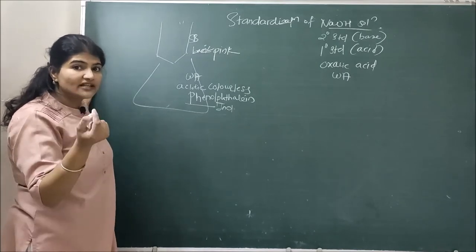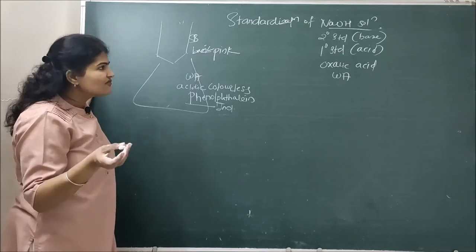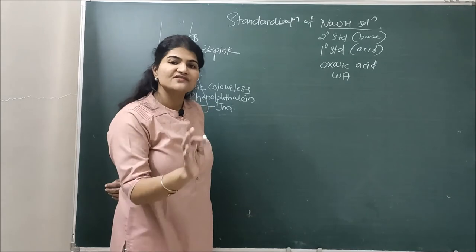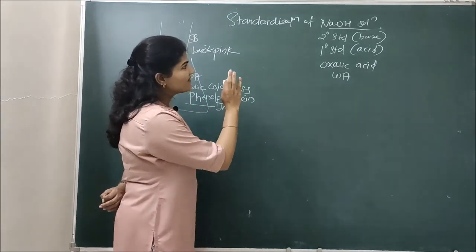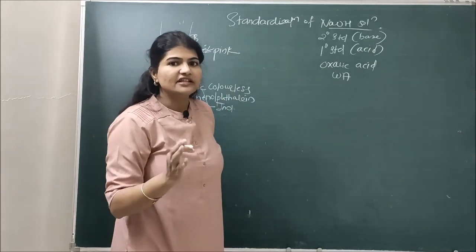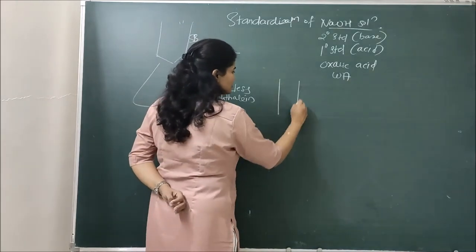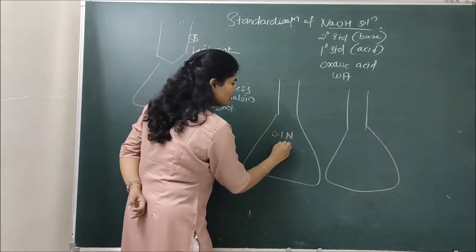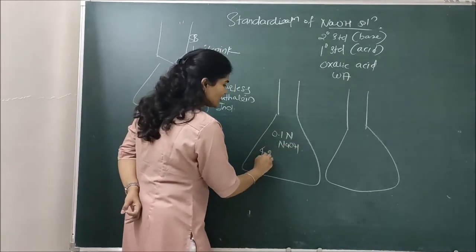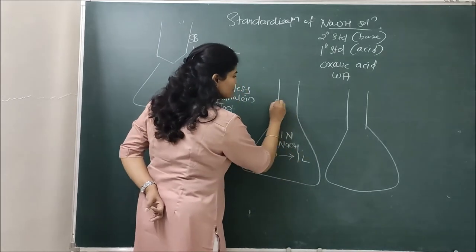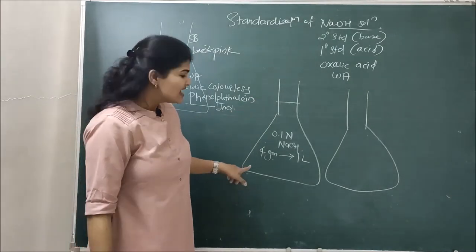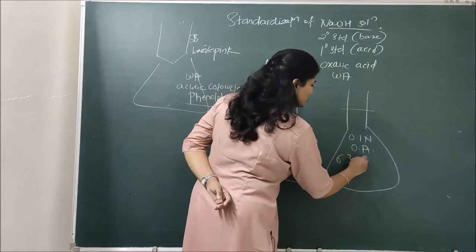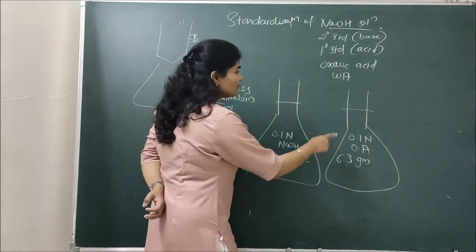Before starting the titration, there is one prerequisite: preparation of reagents. Taking the example of 0.1 normal concentration, we need to prepare 0.1 normal solutions of both NaOH and oxalic acid. We will need two volumetric flasks. To prepare 0.1 normal NaOH, weigh 4 grams of NaOH and dissolve it in water to make the volume 1 liter. To prepare 0.1 normal oxalic acid solution, weigh 6.3 grams of oxalic acid and dissolve it in water until the volume becomes 1 liter.